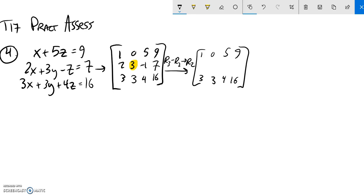3 minus 2, row 3 minus row 1. 3 minus 2 is 1. 3 minus 3 is 0, which I wanted to happen. 4 minus negative 1, that should be a 5. 16 minus 7 is 9.